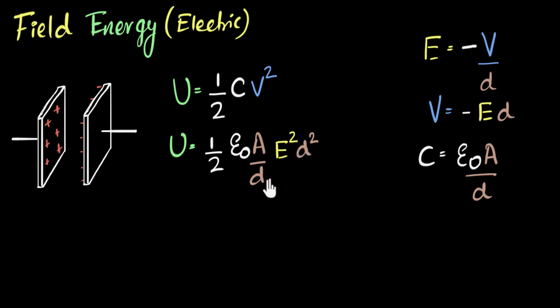All right, so we can simplify. The d goes away. And so what I get now is U, that is the energy stored in the capacitor, equals half epsilon naught. Let me write the E squared first. I got what I wanted.